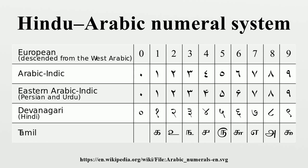Muslim scientists used the Babylonian numeral system, and merchants used the Abjad numerals, a system similar to the Greek and Hebrew numeral systems. Similarly, Fibonacci's introduction of the system to Europe was restricted to learned circles. The credit for first establishing widespread understanding and usage of the decimal positional notation among the general population goes to Adam Ries, an author of the German Renaissance, whose 1522 work Rechnung auf der Linie und Federn was targeted at the apprentices of businessmen and craftsmen.